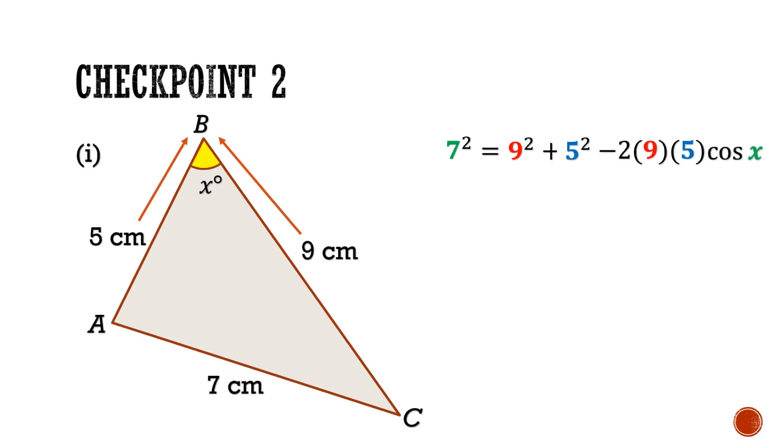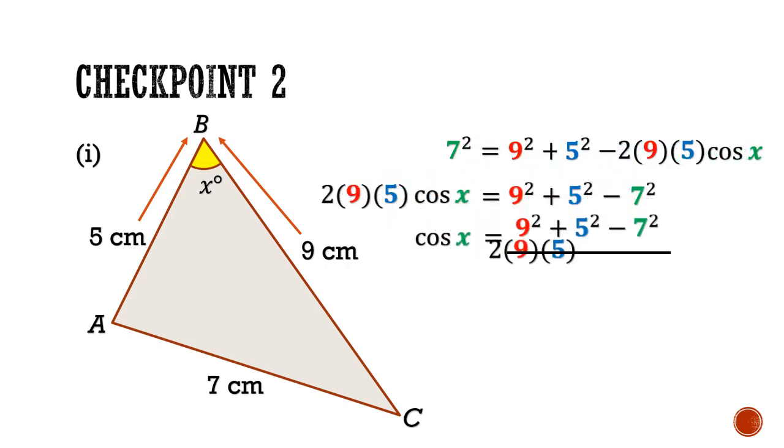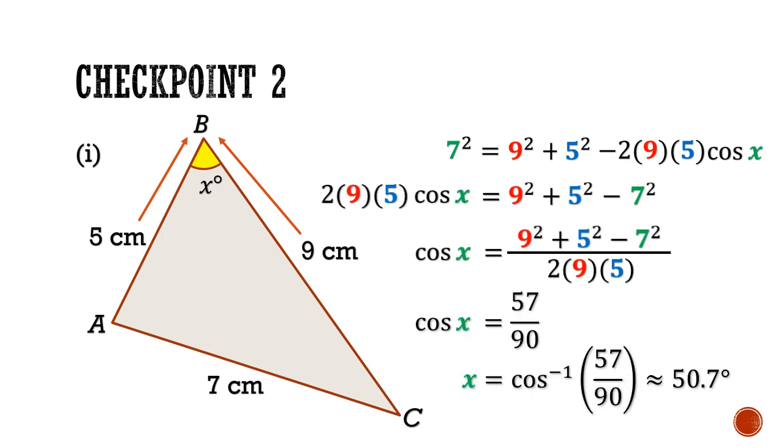Next, with some manipulation, we are able to get cos x = (9² + 5² - 7²) / (2 × 9 × 5). Taking the inverse cosine function, we will get the unknown x degrees equals 50.7 degrees.